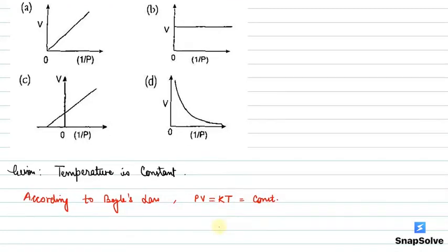Now, if we write the constant as capital K or small k, we can write that PV is equal to small k, because KT is constant and K is constant. So we have written this as small k. What can we write here? V can be written as k over P.